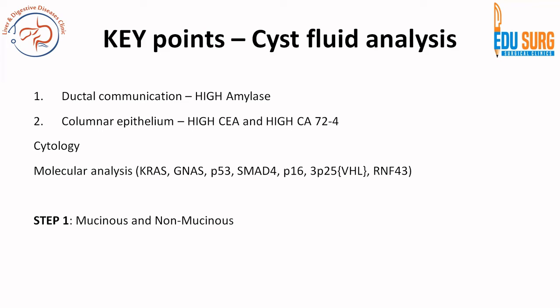Whenever we are doing cyst fluid analysis, the first thing we need to identify is whether the cyst is mucinous or non-mucinous. If you have a non-mucinous cyst, the first three parts of this series have already shown you how to manage it. The upcoming discussions are going to be predominantly based on identification that the lesion is mucinous and then how to apply guidelines and manage these patients. Once you know the lesion is non-mucinous, we have already seen how to manage it. Now we focus on step two: identification that the lesion is mucinous.